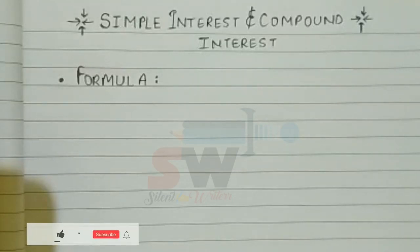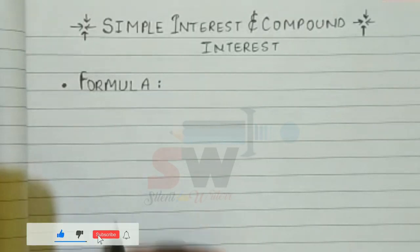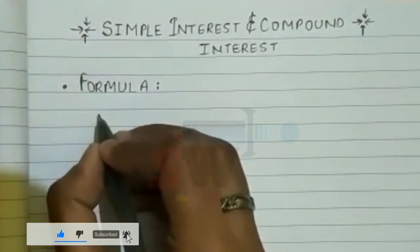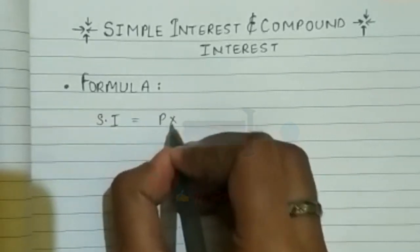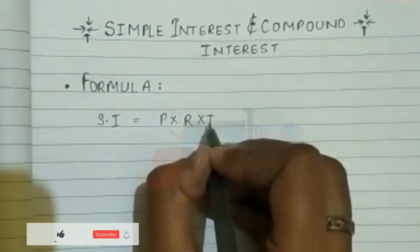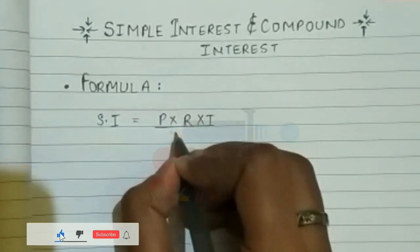Simple interest and compound interest - here are some formulas we can find simple interest and compound interest with. Let's begin. First, SI (simple interest) equals P × R × T divided by 100.